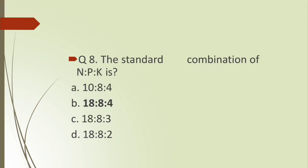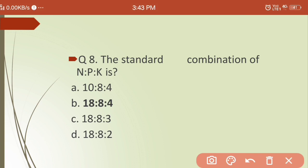Eighth question: what is the standard combination of nitrogen, phosphorus, and potassium? Options are: (a) 10:8:4, (b) 18:8:4, (c) 18:8:3, (d) 18:8:2. The standard combination of N:P:K is 18:8:4.